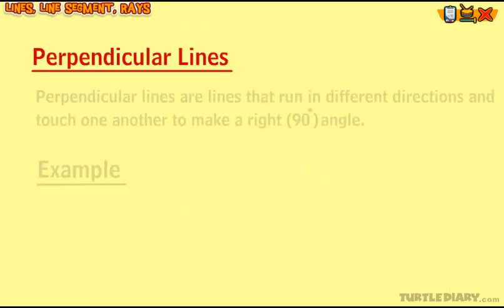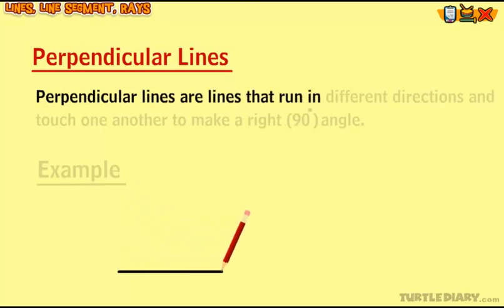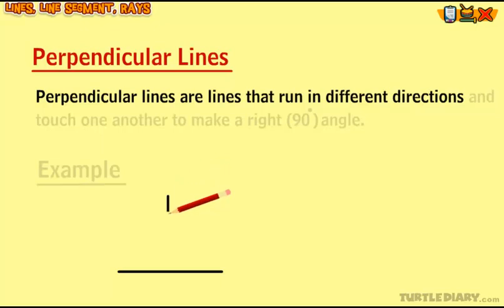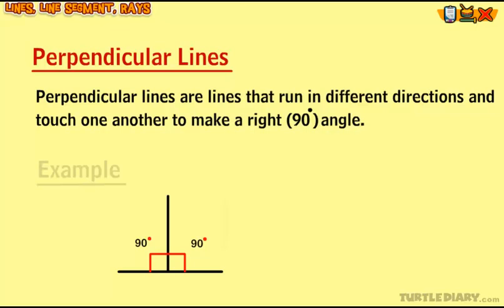Perpendicular lines are lines that run in different directions and touch one another to make a right 90-degree angle.